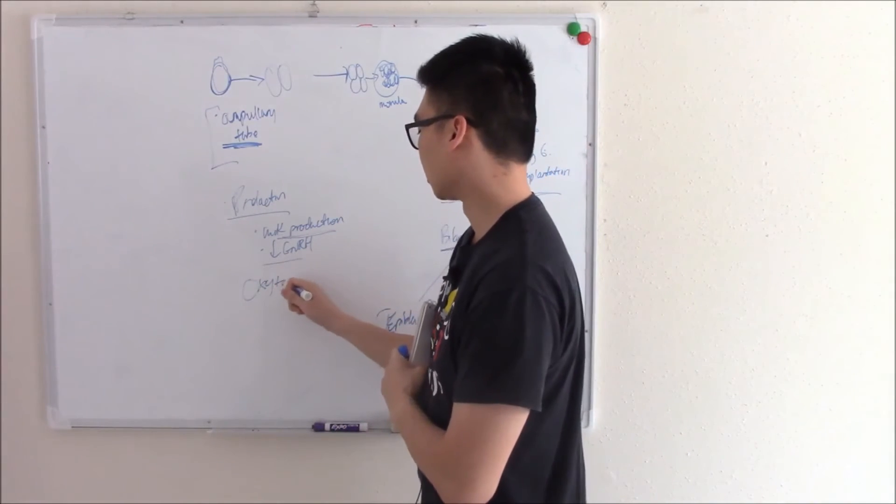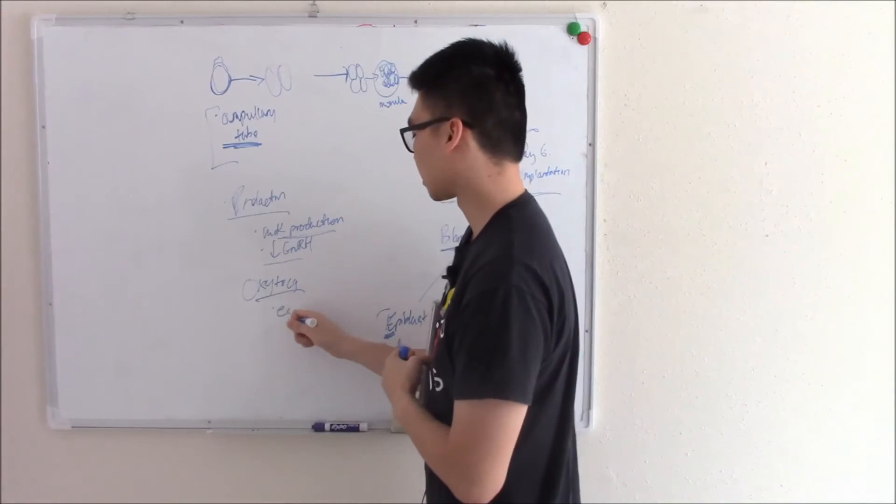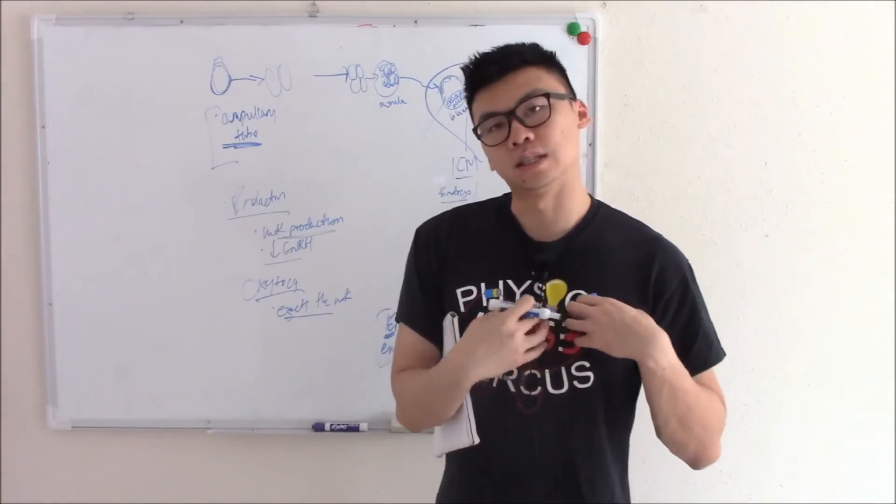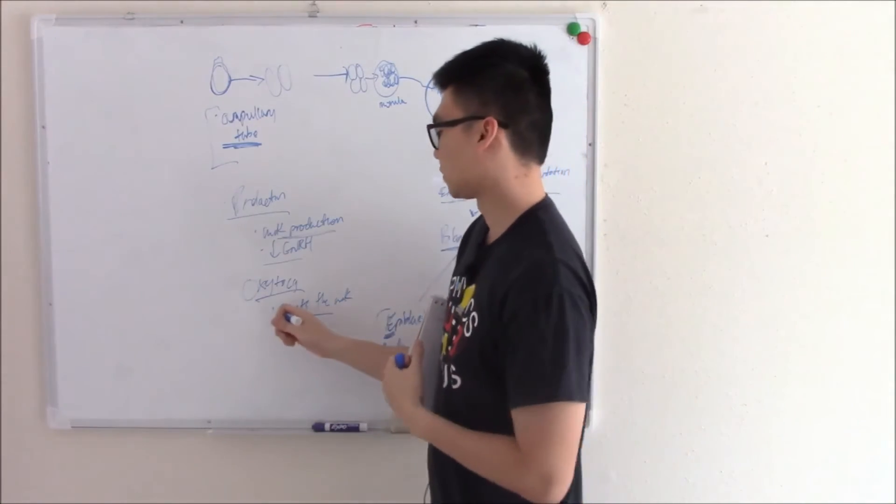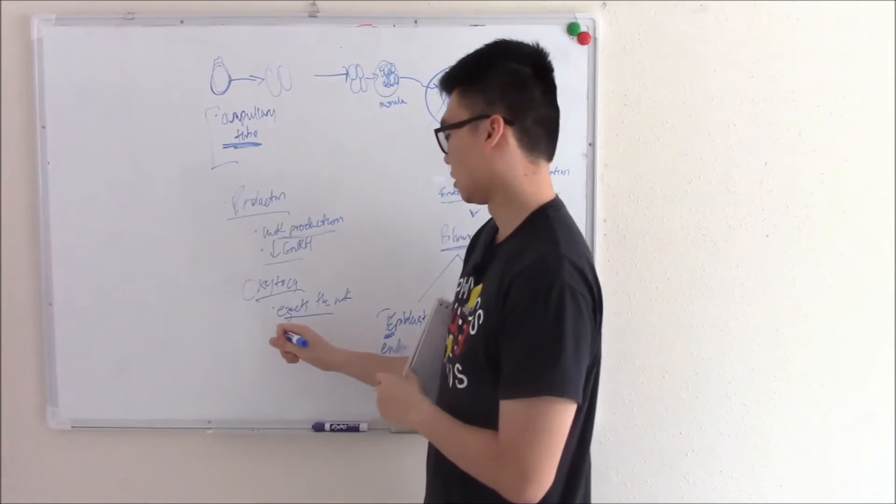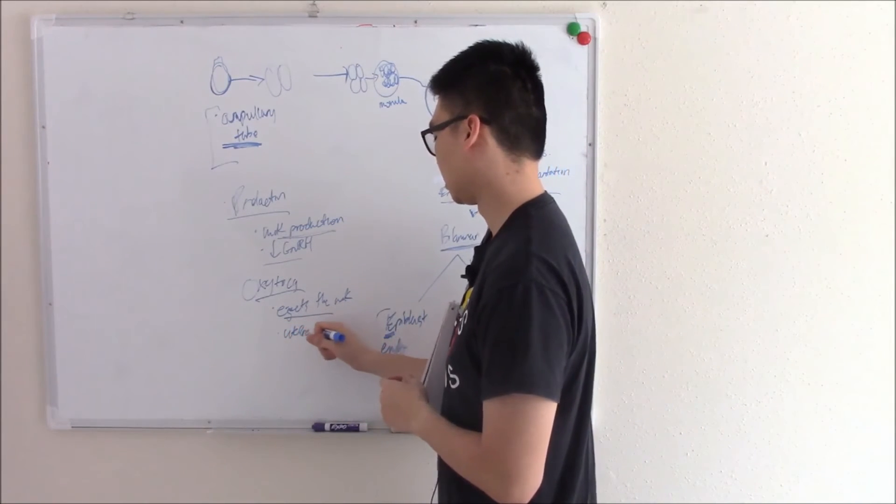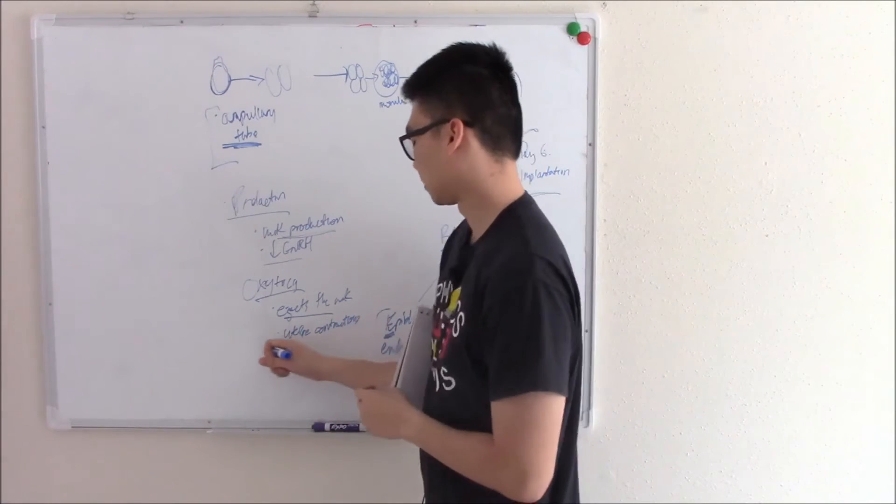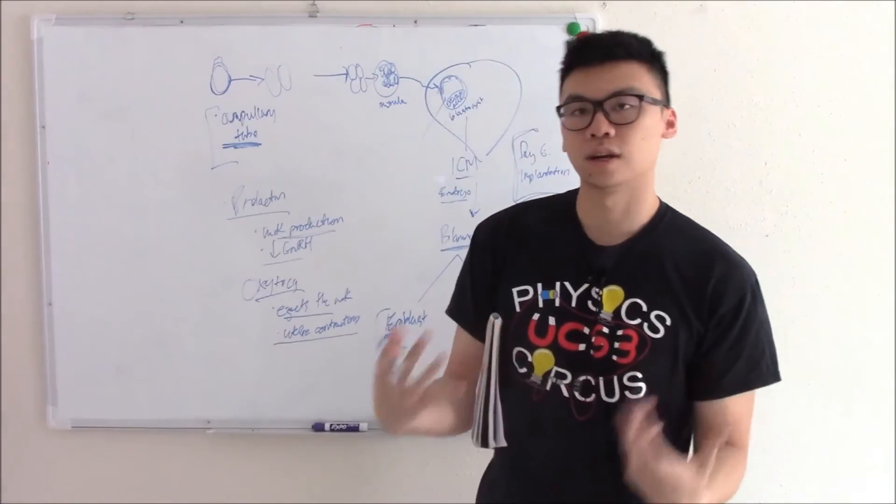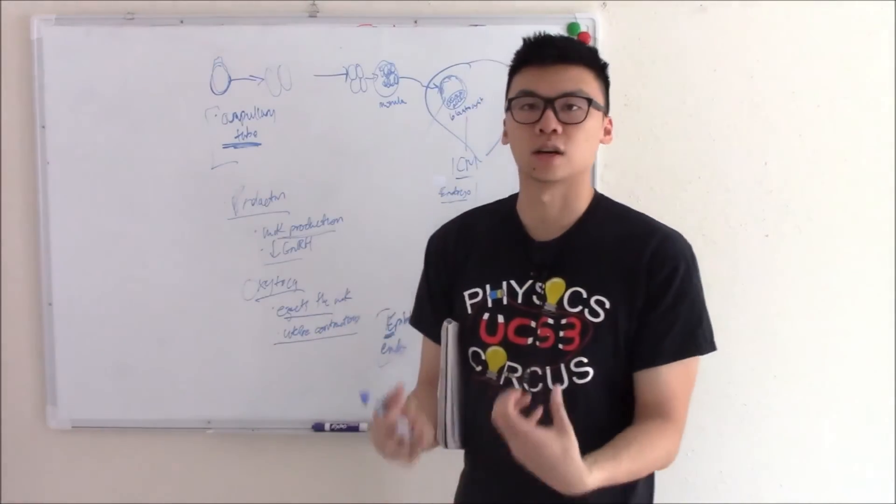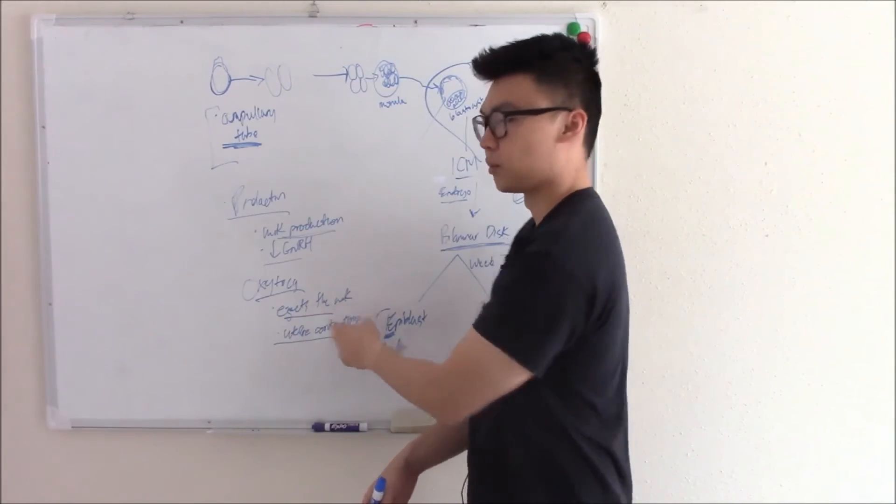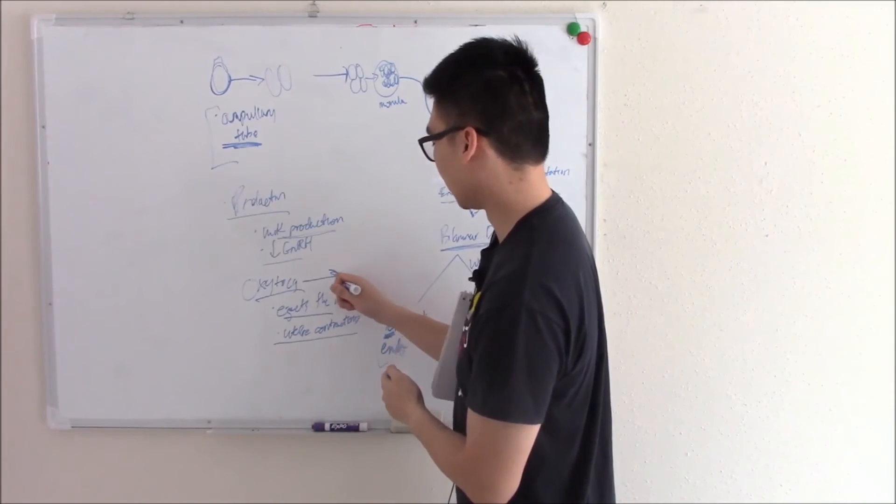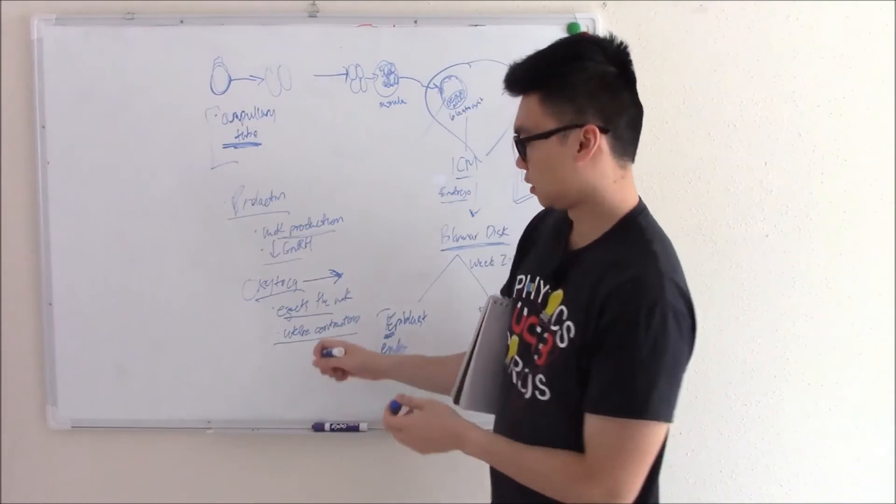That's prolactin. Another very similar one is oxytocin. Oxytocin ejects the milk. This is what causes milk to eject from your nipple in the first place. Oxytocin also causes uterine contraction. So when you're nearing the end of your pregnancy, it'll start to cause uterine contraction, help you deliver. Then after you deliver the baby, it'll help you eject the milk.